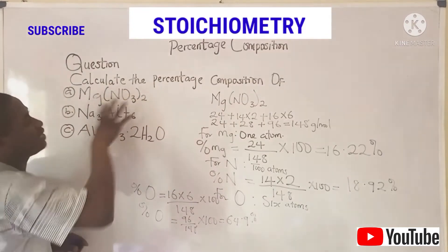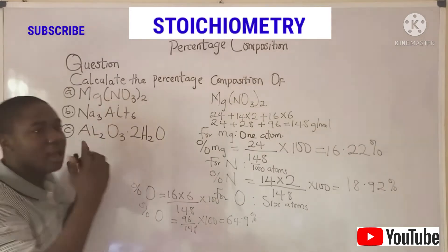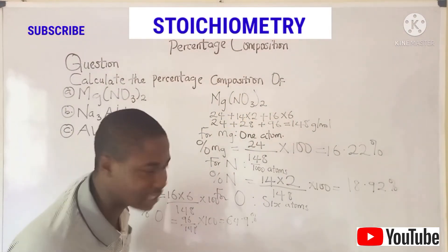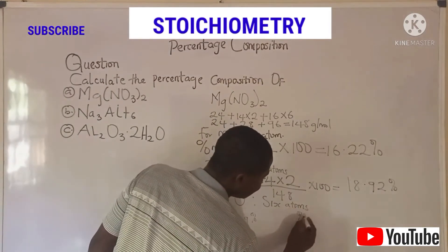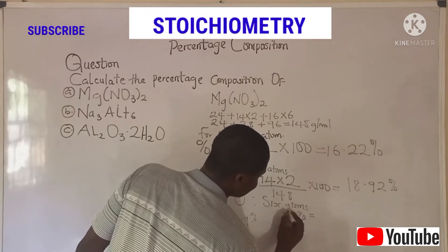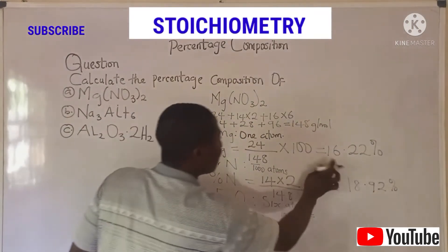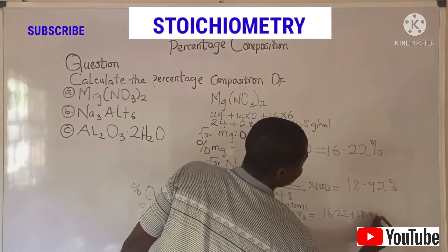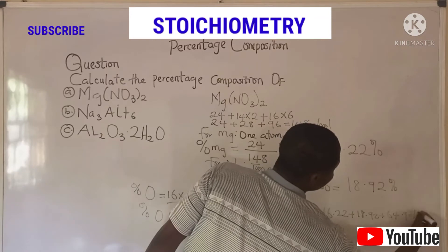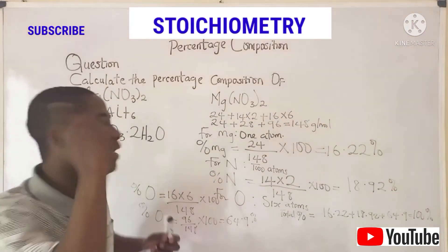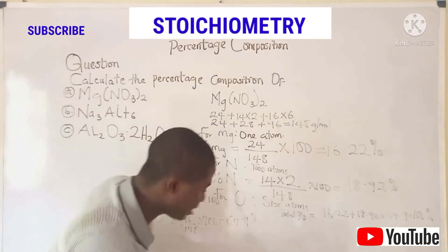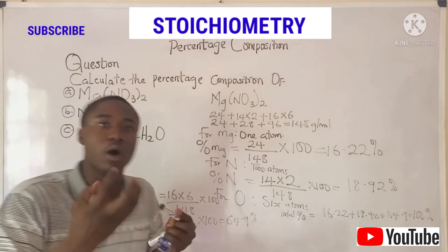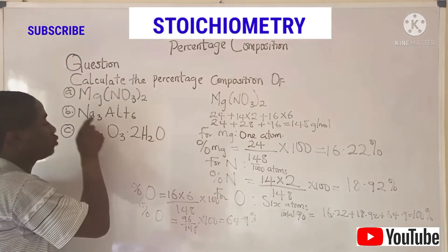We've deduced the percentage of each element that makes up magnesium nitrate. But to be sure your answers are correct, you add all the percentages — they should give us 100%. So: 16.22 plus 18.92 plus 64.9 — when you put this in the calculator, you get 100%. If it's not 100, it means there are some issues with the calculation. That's how you calculate the percentage composition of elements in a compound. Now let's quickly move over to the next question.